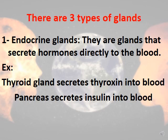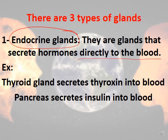We have three types of glands. The first type is called endocrine glands. Endocrine glands are glands that secrete hormones directly into the blood. An example is the thyroid gland, which secretes the hormone thyroxine. Another example is the pancreas, which secretes insulin. All of them secrete directly into the blood — 'endo' meaning into the blood.